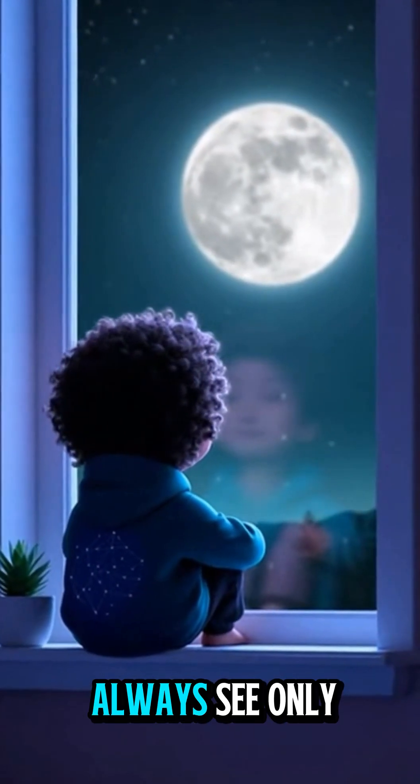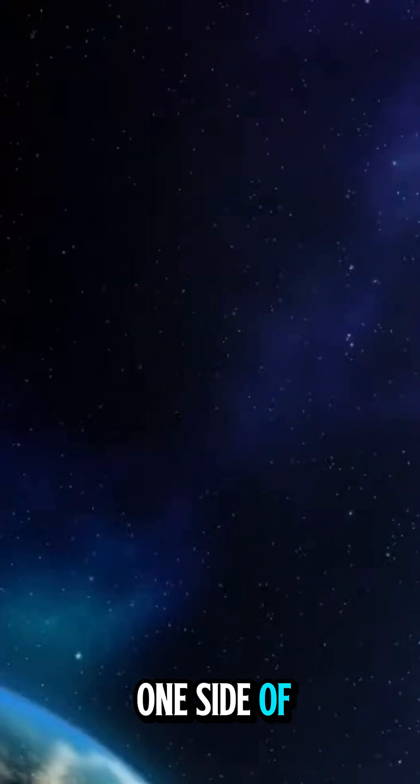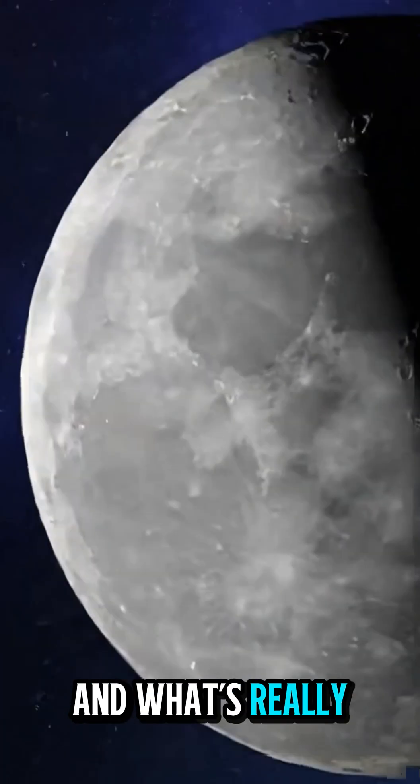Why do we always see only one side of the moon, and what's really on the hidden side?